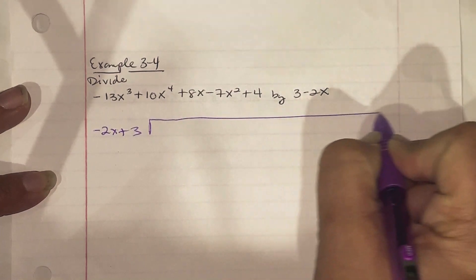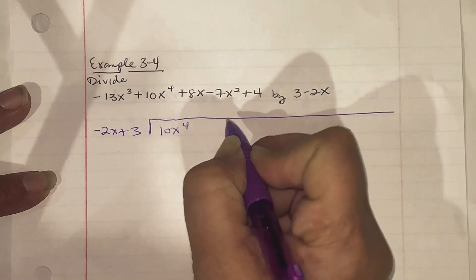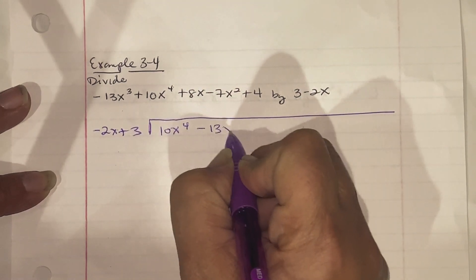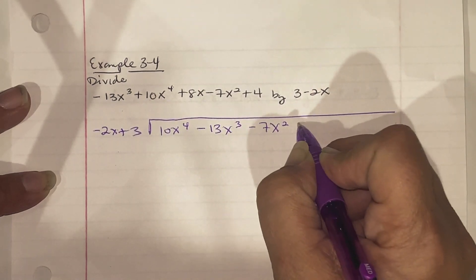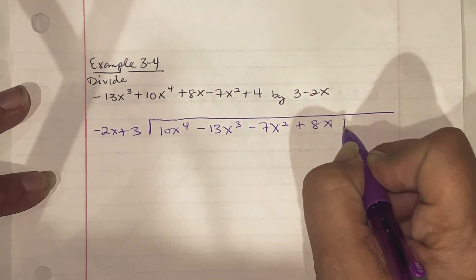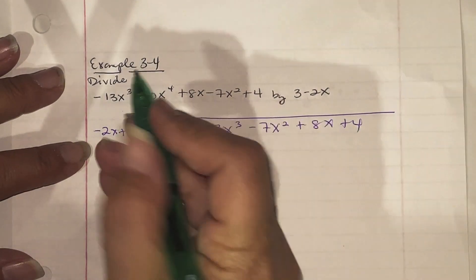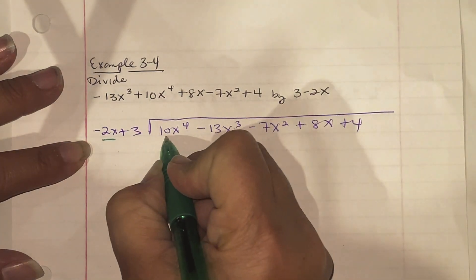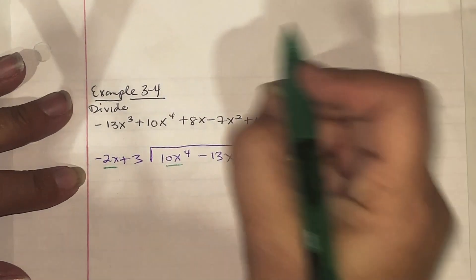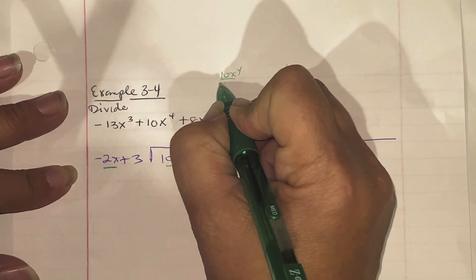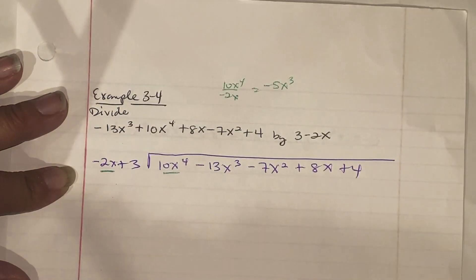Reorder the dividend in decreasing power: 10x to the fourth, then negative 13x cubed, then negative 7x squared, then positive 8x, and positive 4. In polynomial long division, always start with the leading coefficient. Dividing 10x to the fourth by negative 2x gives negative 5x cubed, so we write negative 5x cubed on top over the x cubed position.